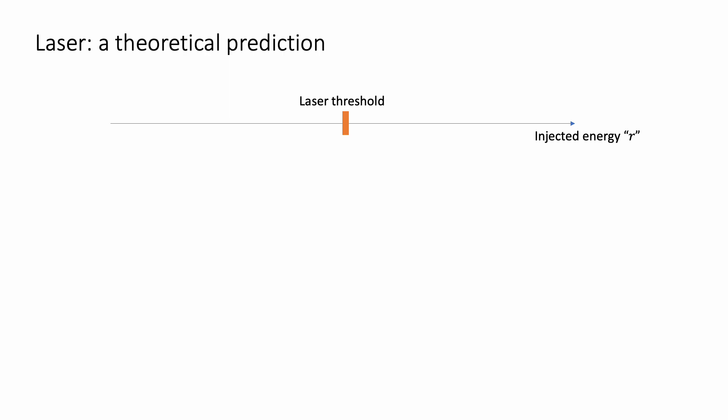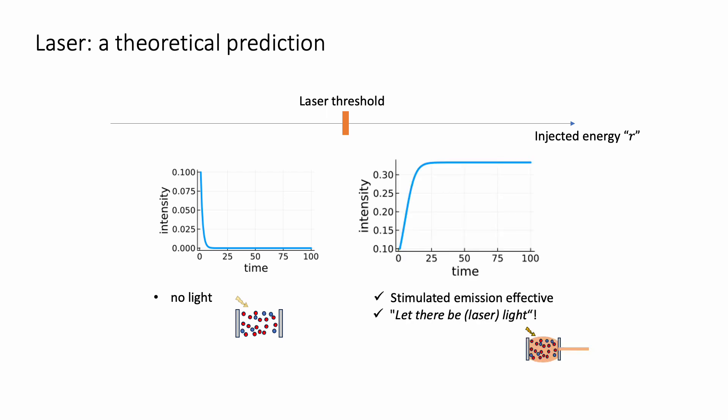The solution of the equation teaches us something about the laser. There is a minimal amount of energy that needs to be provided by the battery, to initiate the cascade process that makes the laser work. This is called laser threshold. Here is a graph of the intensity of light versus time, for a too small amount of energy provided. In this case a finite intensity present initially, decreases to zero for larger times, and the laser turns off. A very different behavior is instead found if the energy provided is larger than the laser threshold. Here we see that the initial light increases and reaches a non-zero value. The laser is now working.